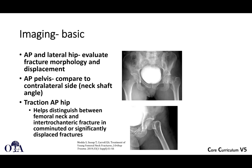Basic imaging includes an AP and lateral of the hip to evaluate fracture morphology and displacement. Here on the left, you can see there's a displaced femoral neck fracture. It's important to get the AP pelvis — you can see the spinous processes line up with the symphysis, with an attempt at 15 degrees internal rotation on the normal side. You can clearly see there's some asymmetry.